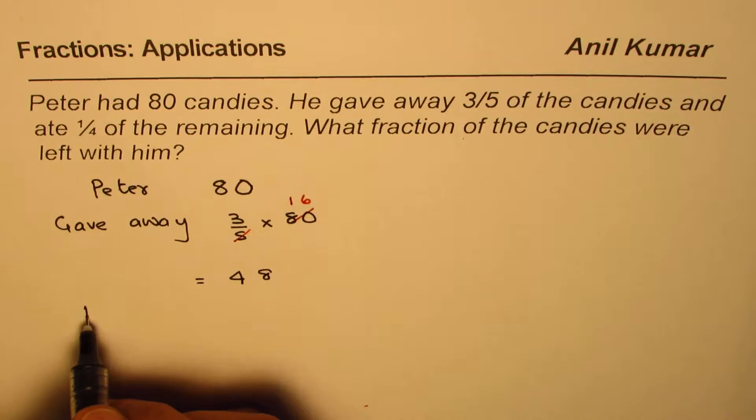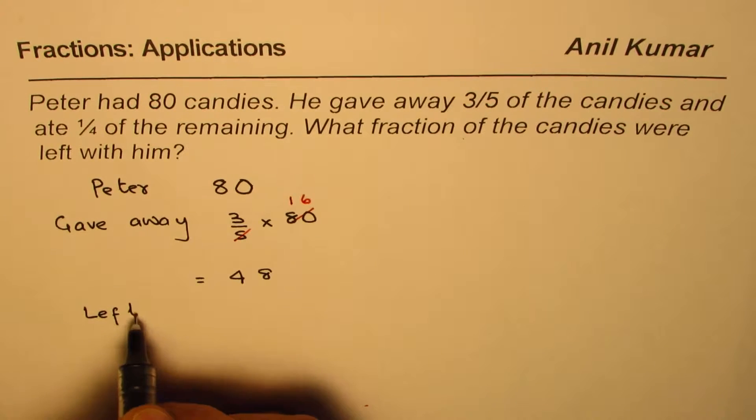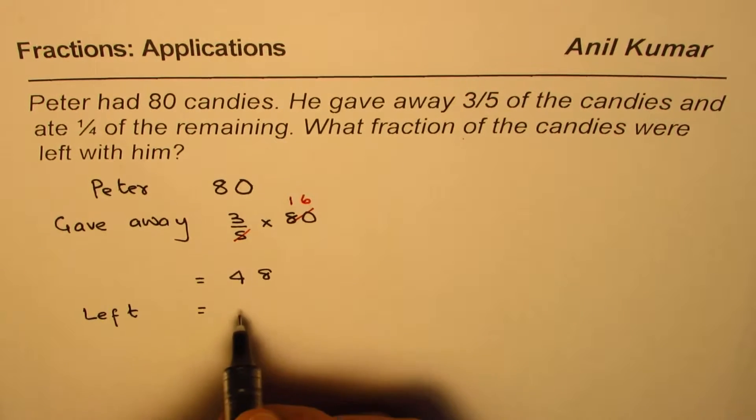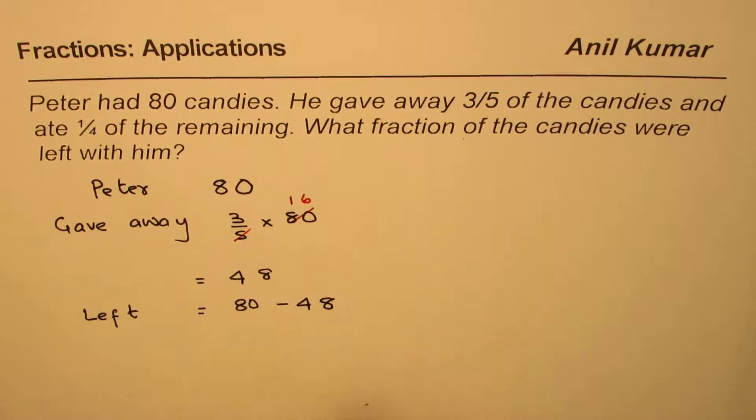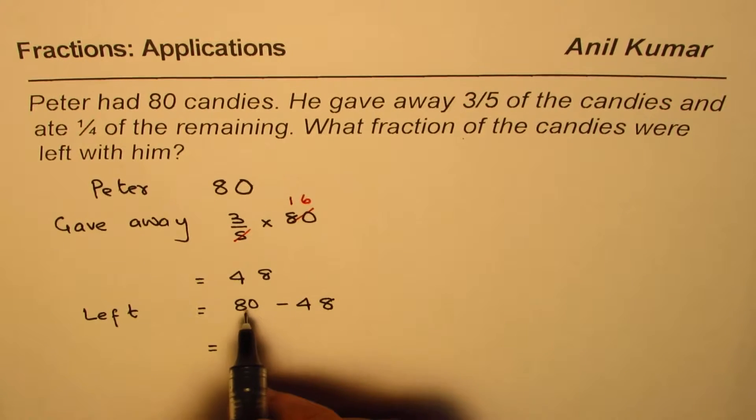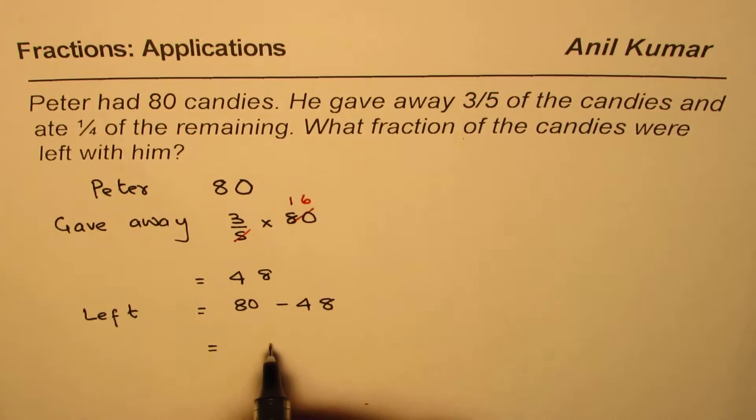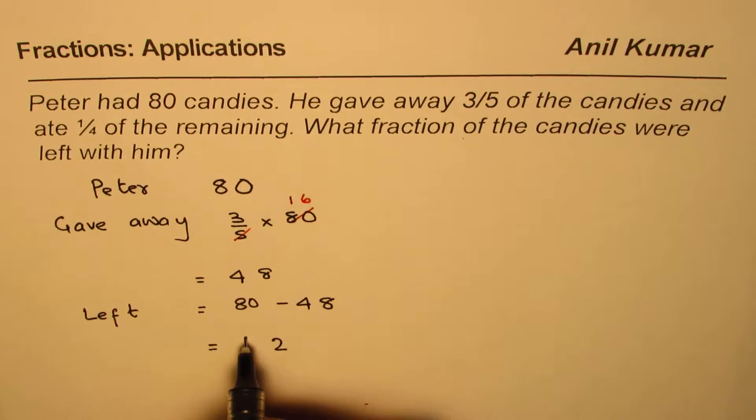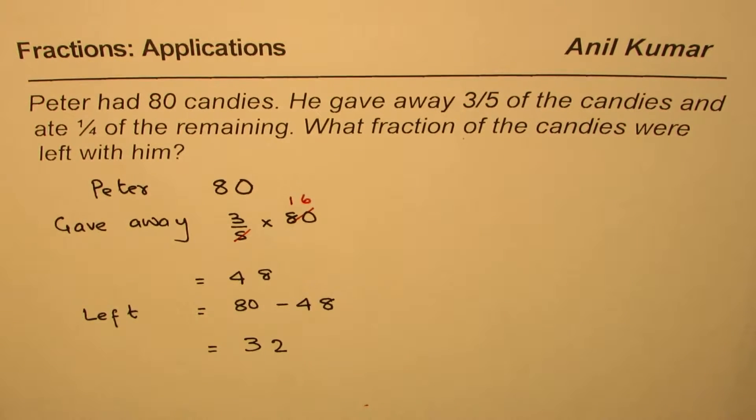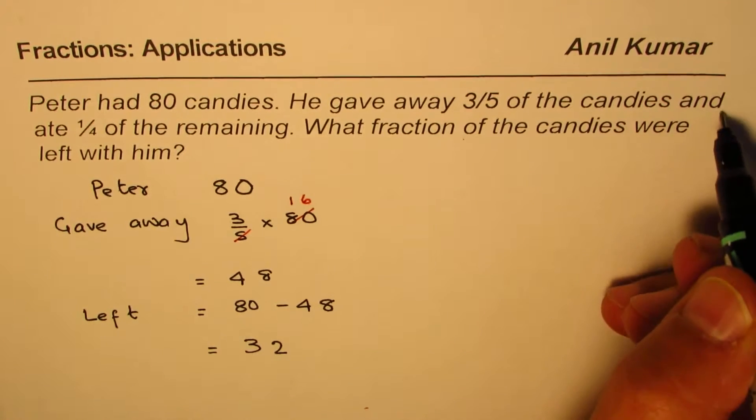So at this stage, we can find how many are left. The candies left here is 80 take away 48. You can borrow, 10 take away 8 is 2, 7 take away 4 is 3. So we got 32 candies left.